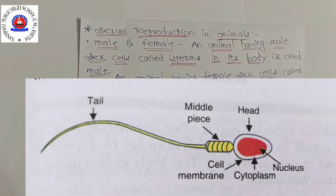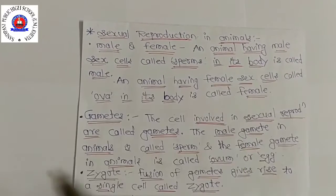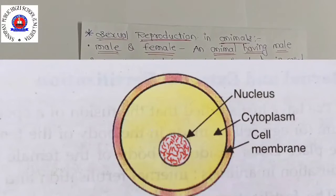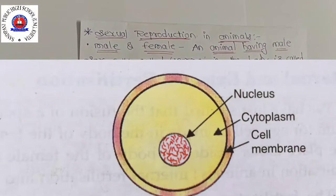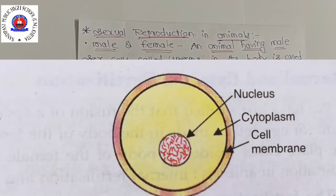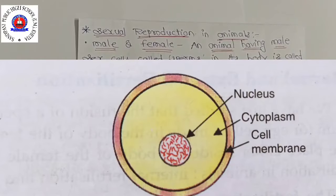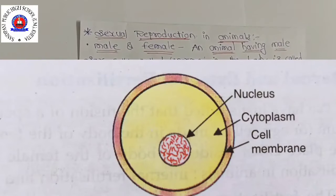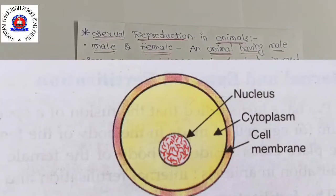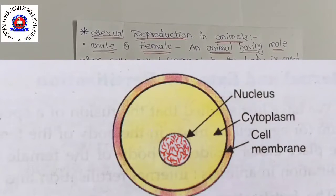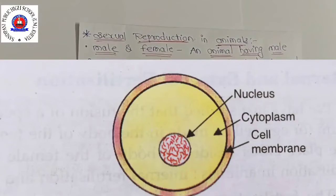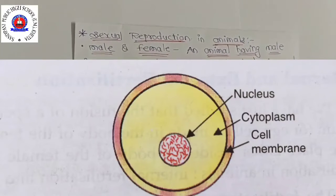The human ovum or egg is the female gamete. An ovum or egg is round and about 0.15 mm in diameter. The ovum is also a single cell having a nucleus, cytoplasm, and cell membrane. This figure is a highly enlarged scale of an ovum present in the female body.